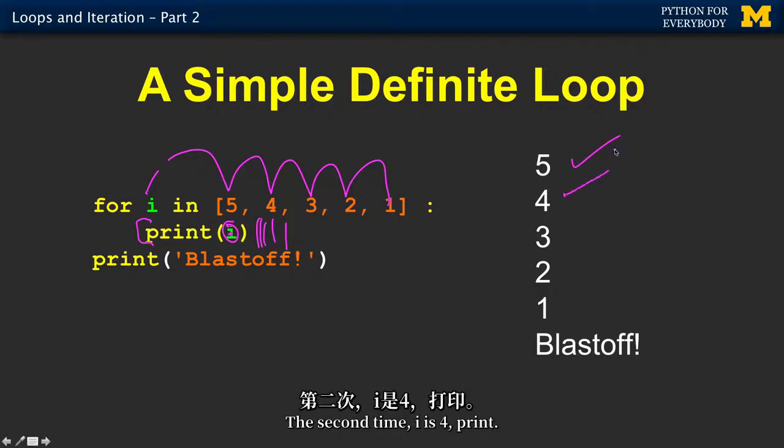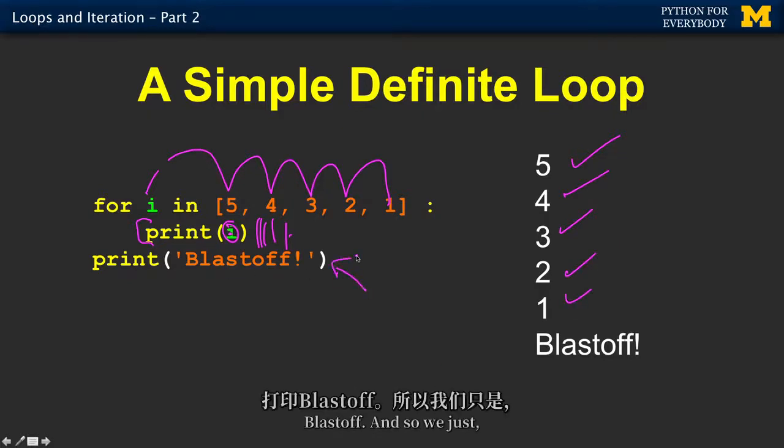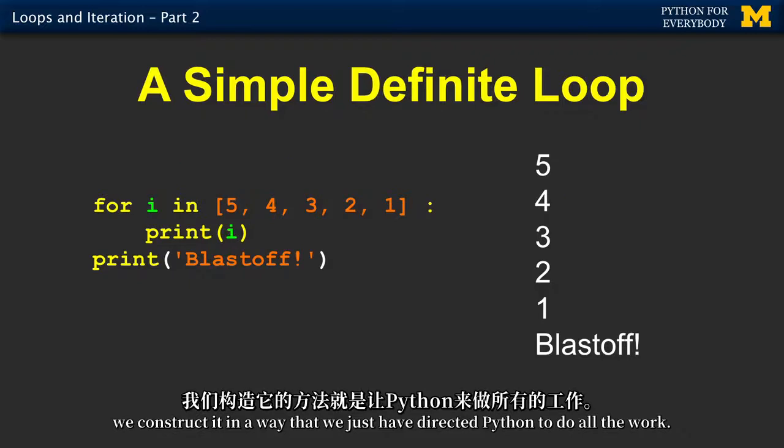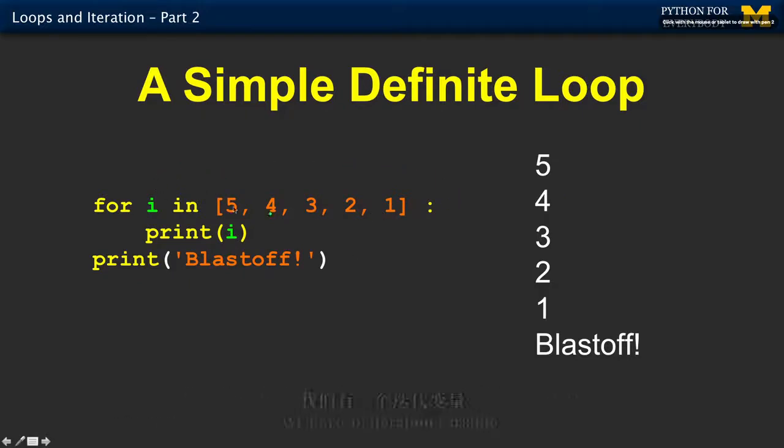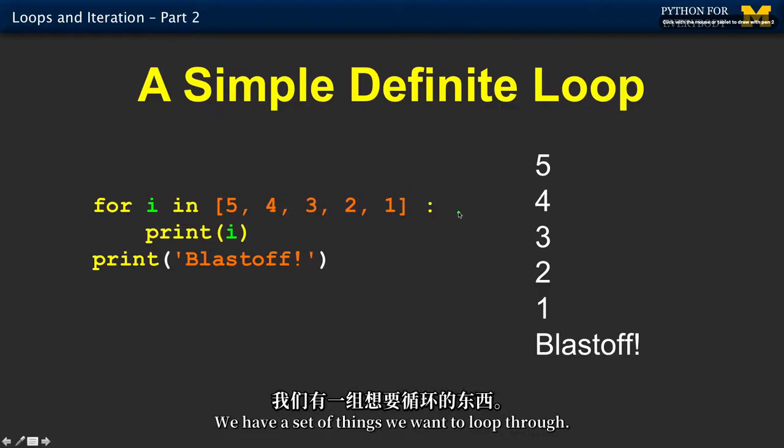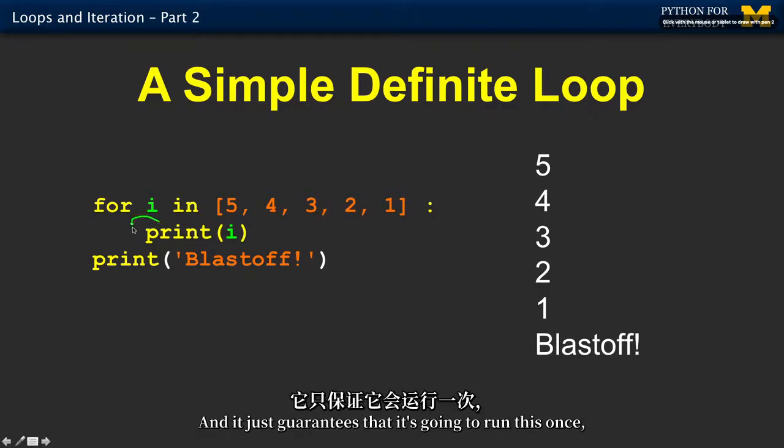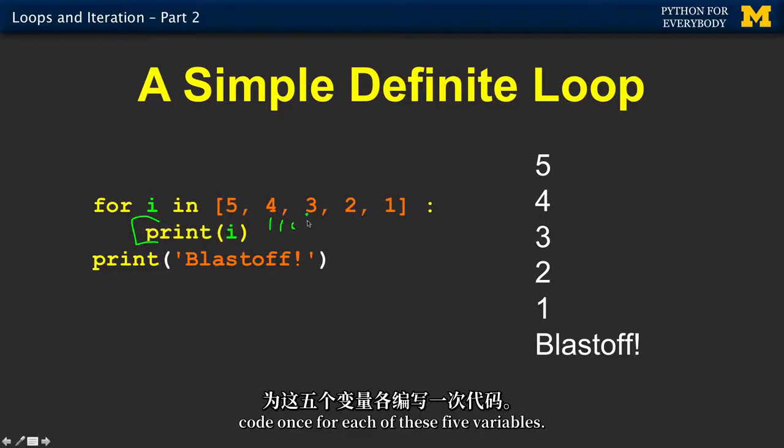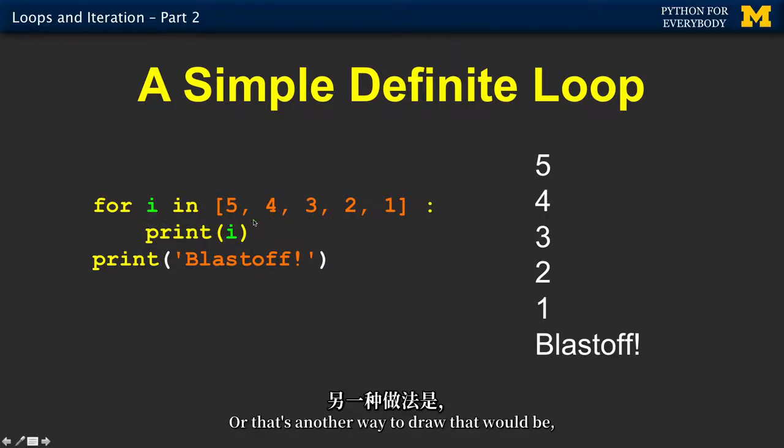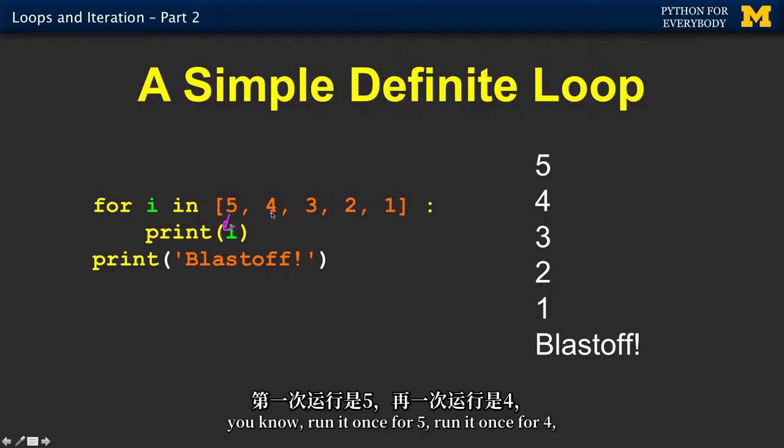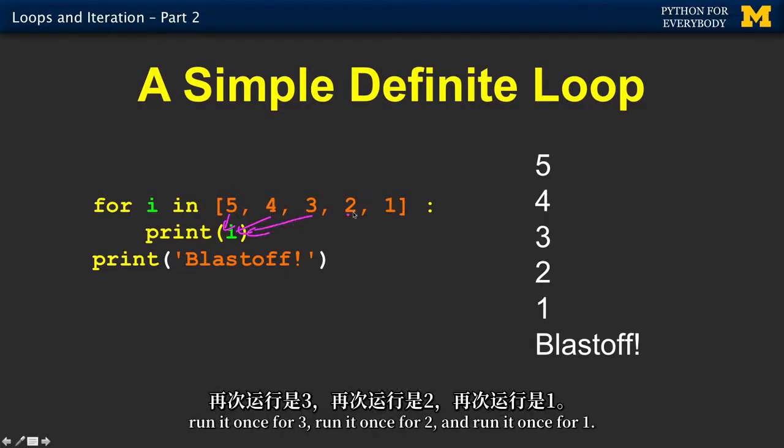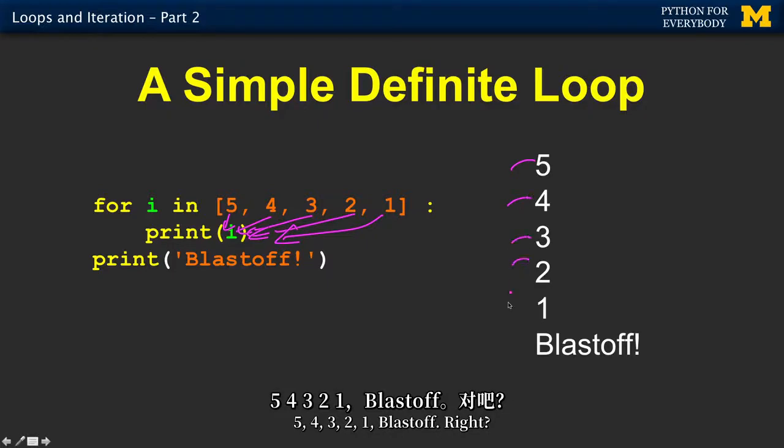The third time I is three, print, two, one, and then we're all done. We have directed Python to do all the work. We have an iteration variable, we have a set of things we're going to loop through, and it just guarantees that it's going to run this code once for each of these five variables. Or that's another way to draw that would be run it once for five, run it once for four, run it once for three, run it once for two, and run it once for one. Five, four, three, two, one, blast off.